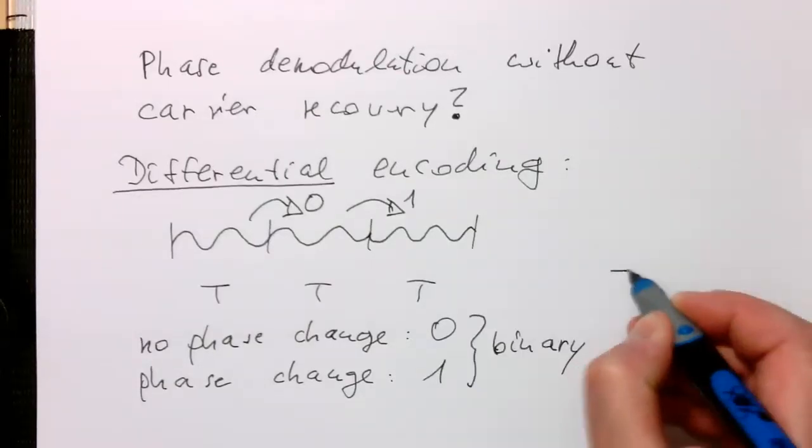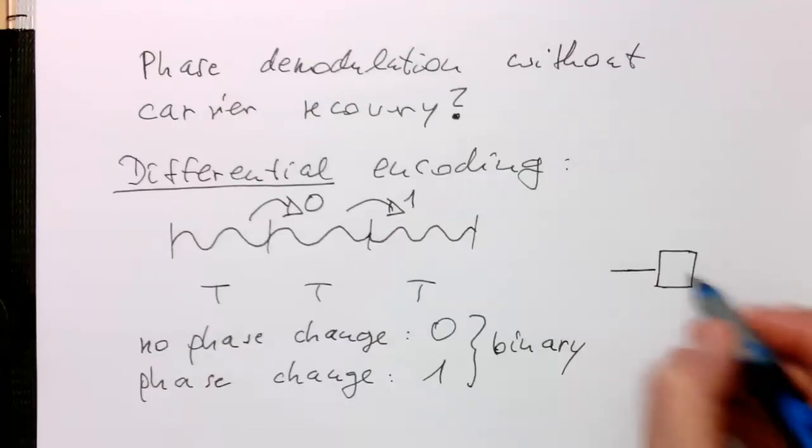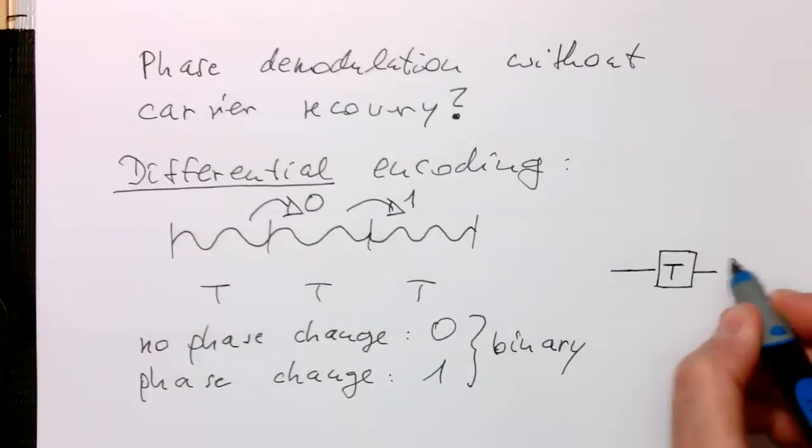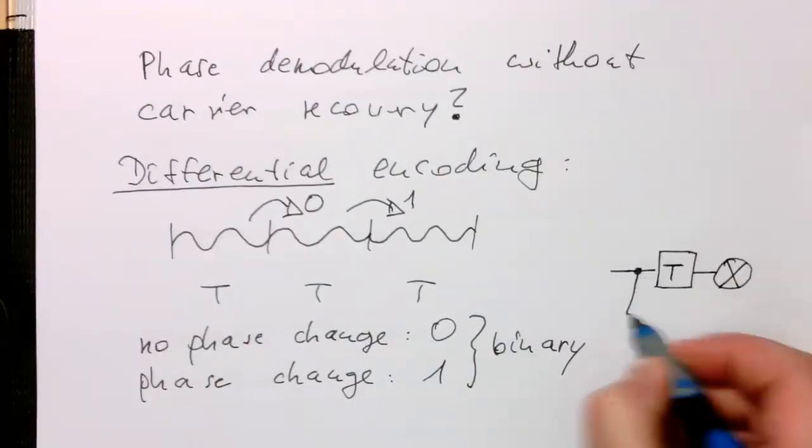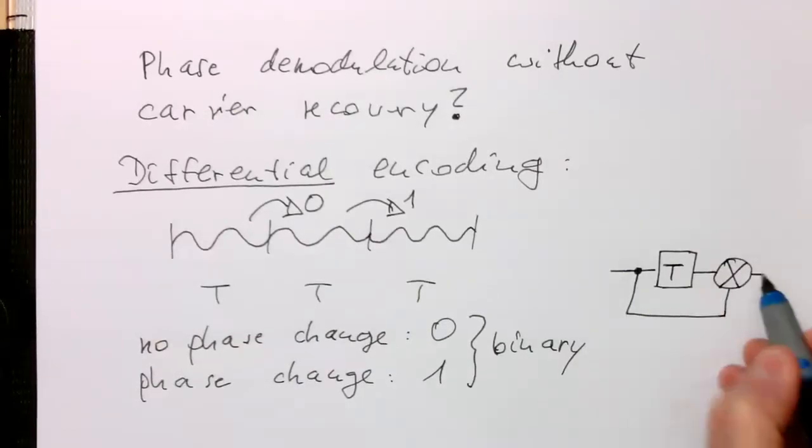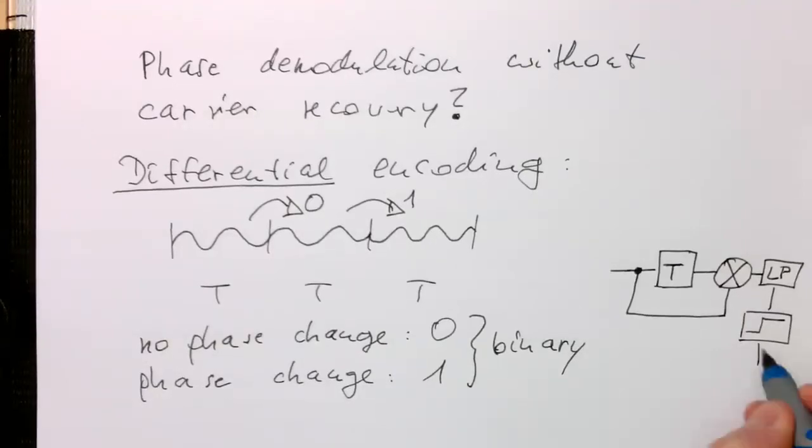So how can we demodulate that? That's pretty simple. We just use a delay unit T, same time as these chunks on the left, or symbol length. And we multiply this with the original signal and do a low-pass filtering of the signal. And then, of course, the threshold again, as usual. And with that, we are getting our data stream back out.